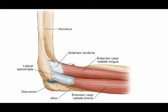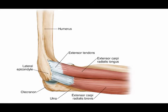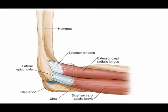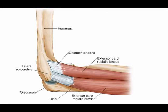The superficial muscles consist of the anconeus muscle, the brachioradialis muscle, the extensor carpi radialis longus, the extensor carpi radialis brevis, the extensor carpi ulnaris, the extensor digitorum, and the extensor digiti minimi.